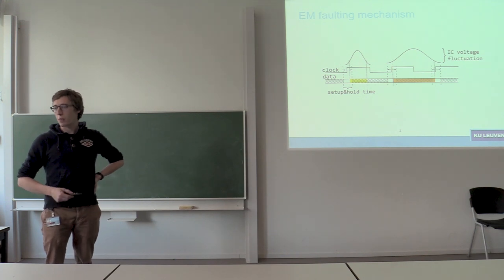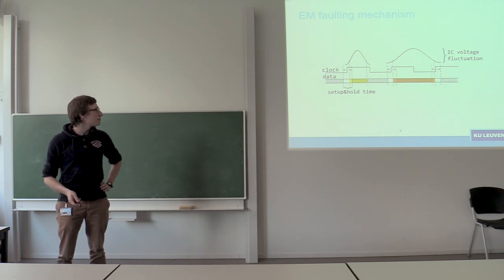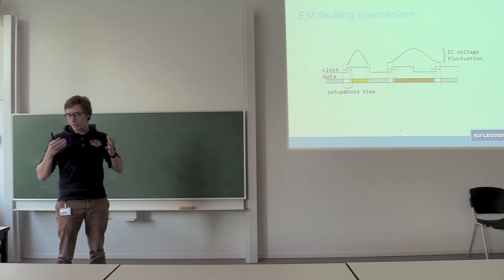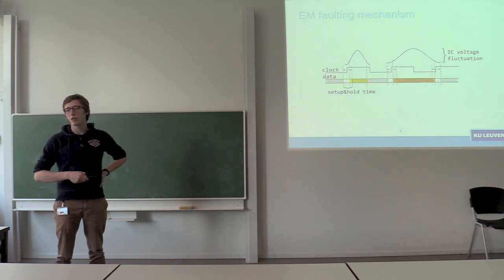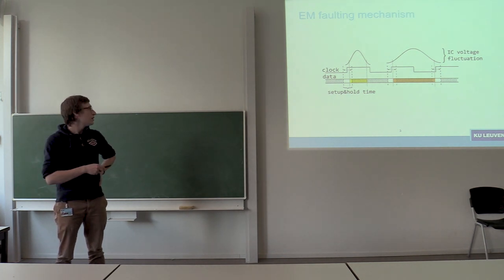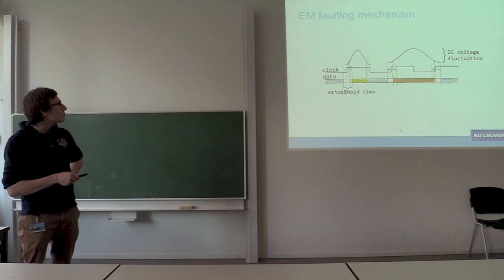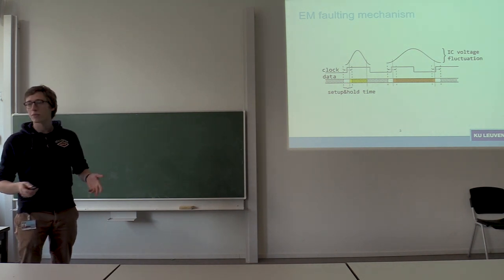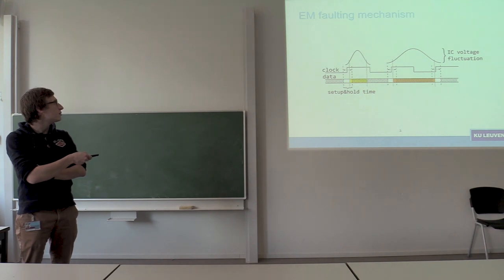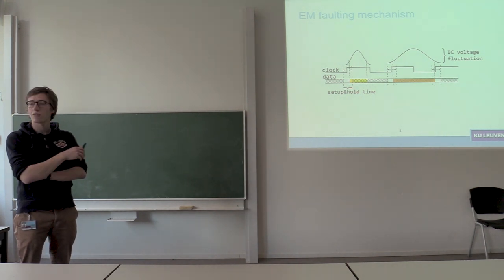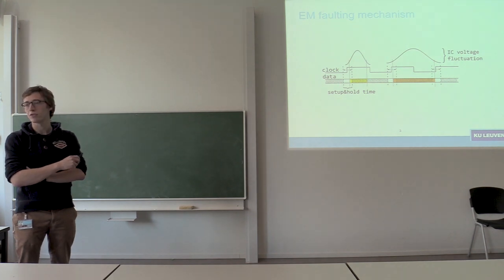So how does EM pulse injection fault an IC, what's the general faulting mechanism? Which is something that we have to understand before we can actually start building an EM fault injection setup. You're emitting a magnetic or E field or a combination of both into your IC and this will cause fluctuations on all the metal wiring that can be found in your IC. This will cause current and voltage fluctuations, and if these voltage and current fluctuations occur during the setup and hold time of your IC, this is when data gets stored. So when there's a clock edge occurring and you want to store something in a register or somewhere else in memory, your data has to be stable during the setup and hold time. If there's a fluctuation in the voltage of your data line during this period, then a fault might occur and the wrong data might be stored into memory.